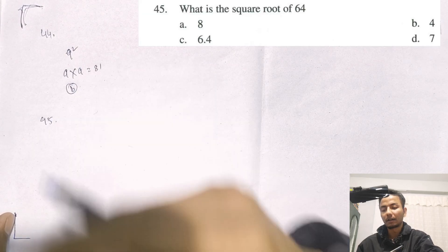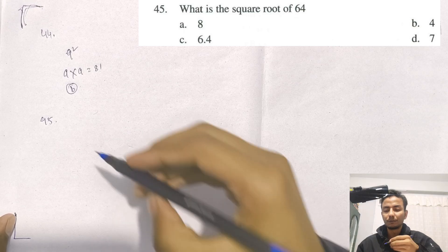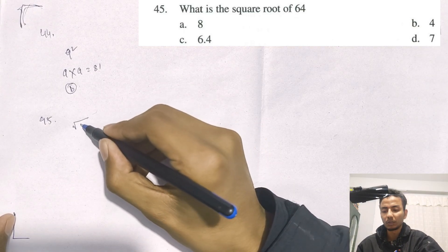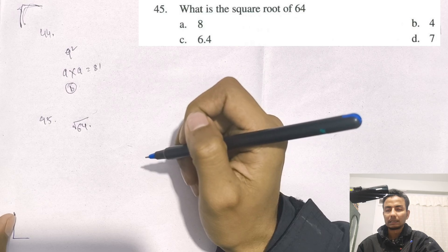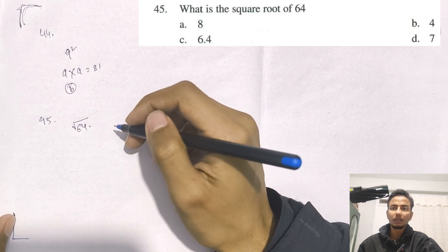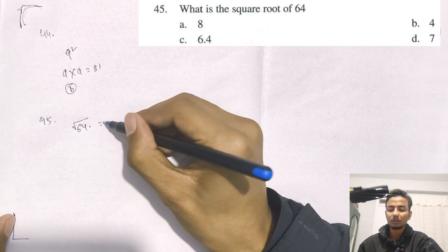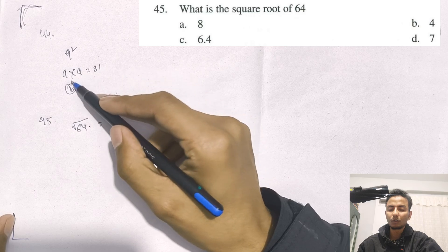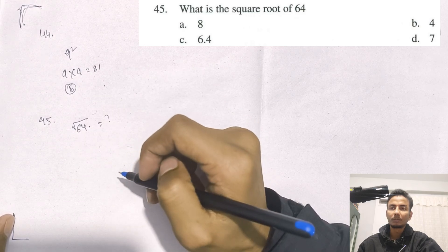Question number 45: What is the square root of 64? The square root of 64 — you can say the numbers are the opposite, because the numbers work in reverse.